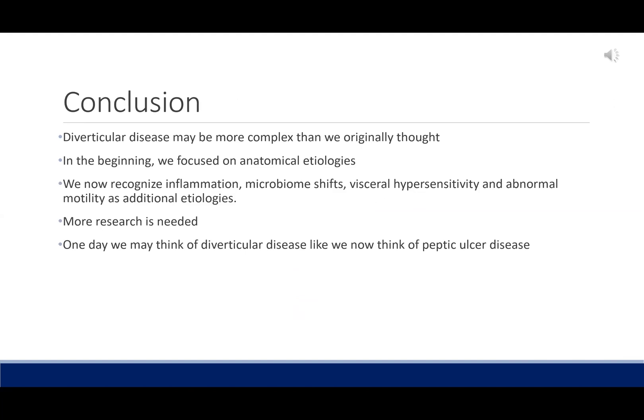In conclusion, consider alternative etiologies of diverticular disease which can inform alternate treatment options. Decisions for surgery should not be automatic and patient factors should be weighed heavily. Diverticulitis may be more complex than we originally thought. In the beginning, we focused on anatomical etiologies; we now recognize inflammation, microbiome shifts, visceral hypersensitivity, and abnormal motility as additional etiologies. More research is definitely needed. One day, we may even think of diverticular disease like we now think of peptic ulcer disease.